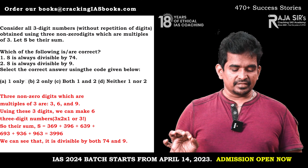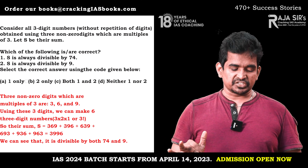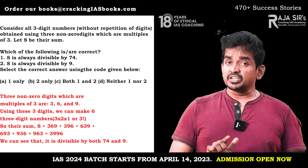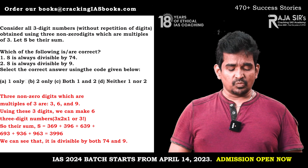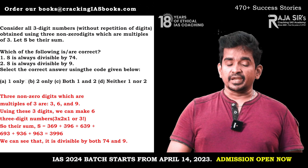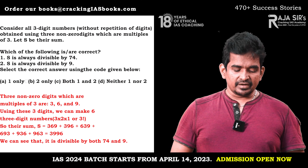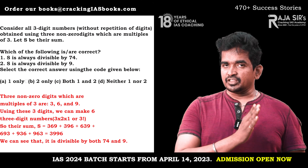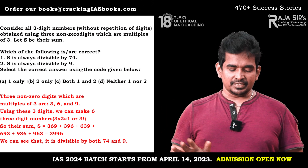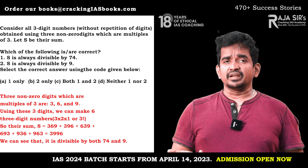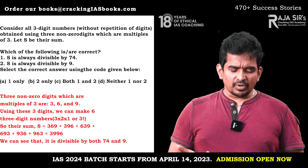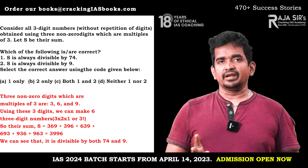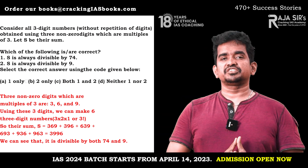Adding the tens digits: 60 + 90 = 150, + 30 = 180, + 90 = 270, + 30 = 300, + 60 = 360. Then the unit digits: 9 + 6 = 15, + 3 = 18, + 9 = 27, + 6 = 33, + 3 = 36. So total from tens and units is 360 + 36 = 396. Adding to the 3600 from hundreds, S = 3996.